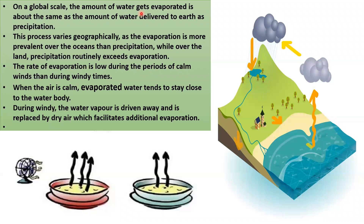On a global scale, the amount of water evaporated is the same as the amount of water delivered to the earth as precipitation. This process varies geographically — evaporation is more prevalent over the oceans than precipitation, while over the land precipitation routinely exceeds evaporation. The rate of evaporation is low during periods of calm winds. When the air is calm, evaporated water tends to stay close to the water body, but during windy conditions water vapor is driven away and replaced by dry air, which facilitates additional evaporation.